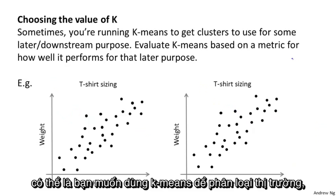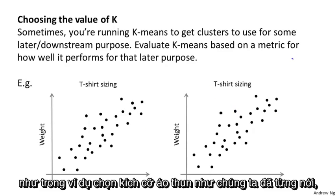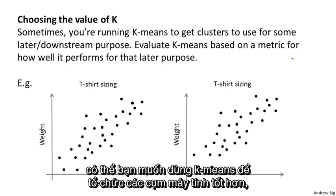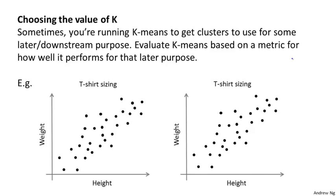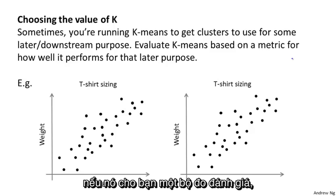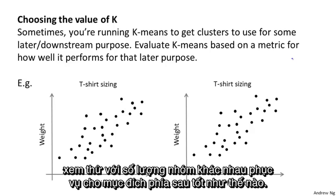Maybe you want to use k-means in order to do market segmentation, like in the t-shirt sizing example that we talked about. Maybe you want k-means to organize a computer cluster better. Maybe you're learning clusters for some different purpose. And so if that later downstream purpose, such as market segmentation, if that gives you an evaluation metric, then often a better way to determine the number of clusters is to see how well different numbers of clusters serve that later downstream purpose.